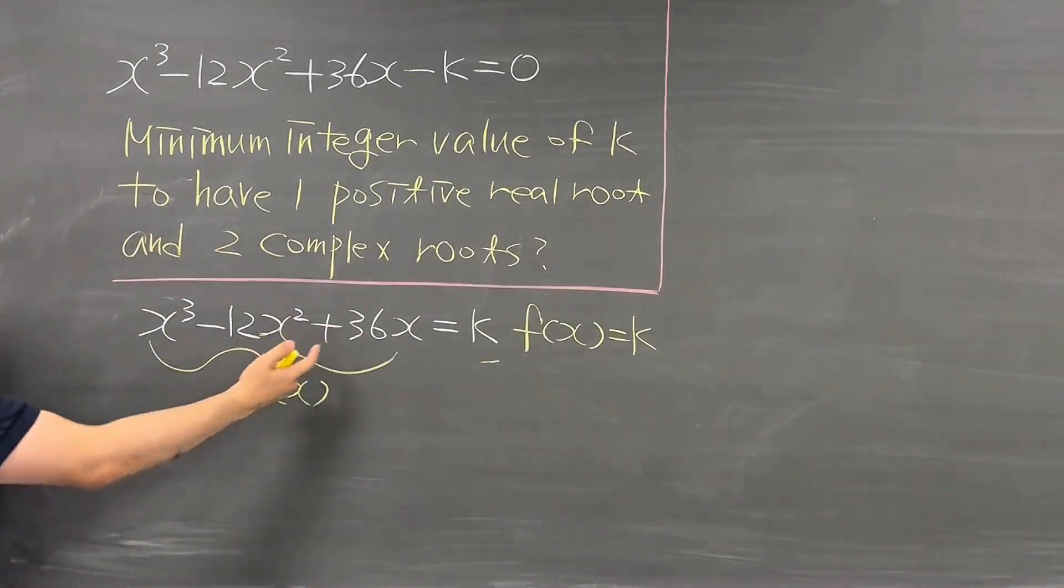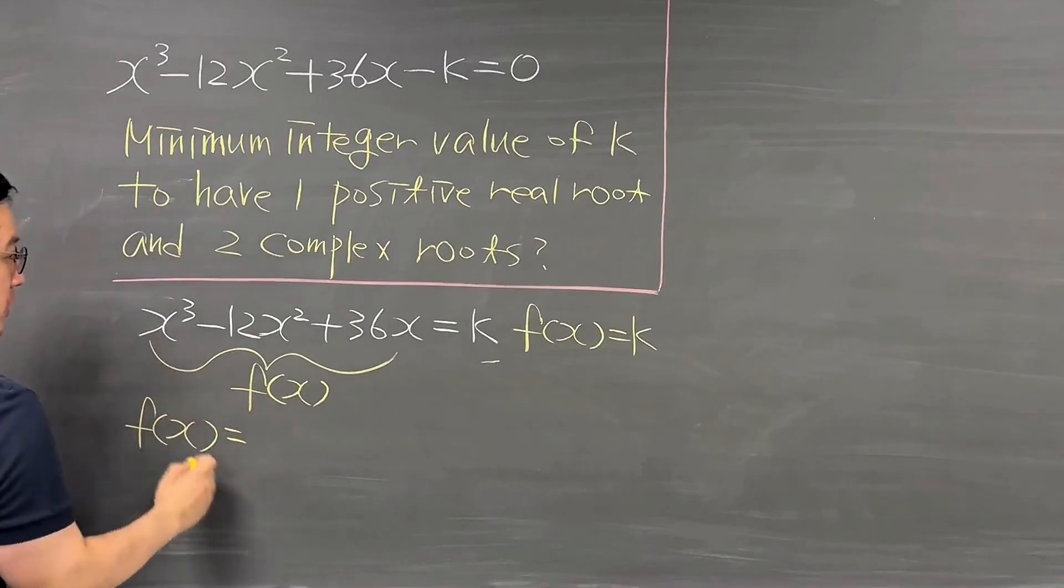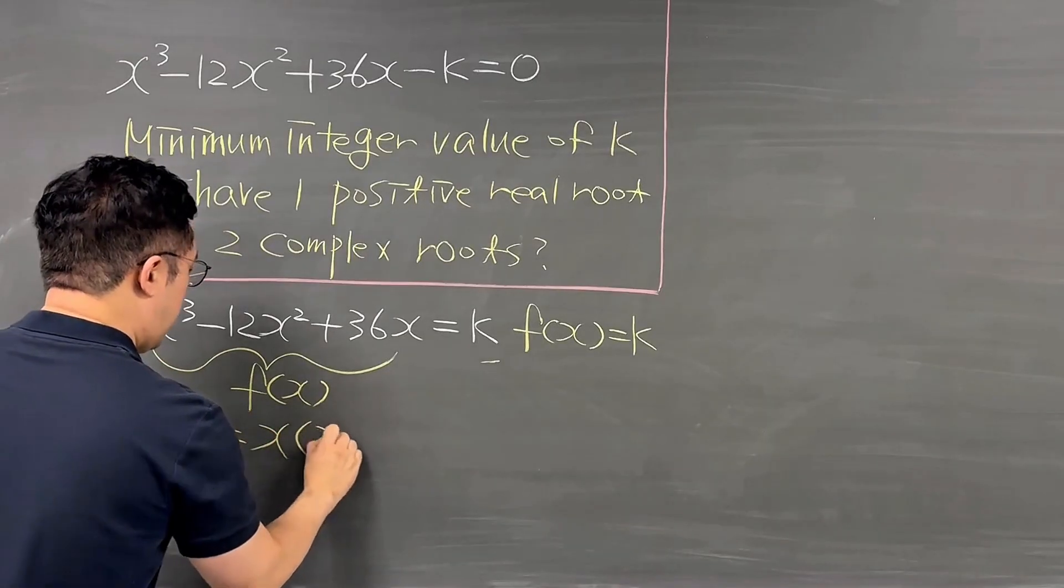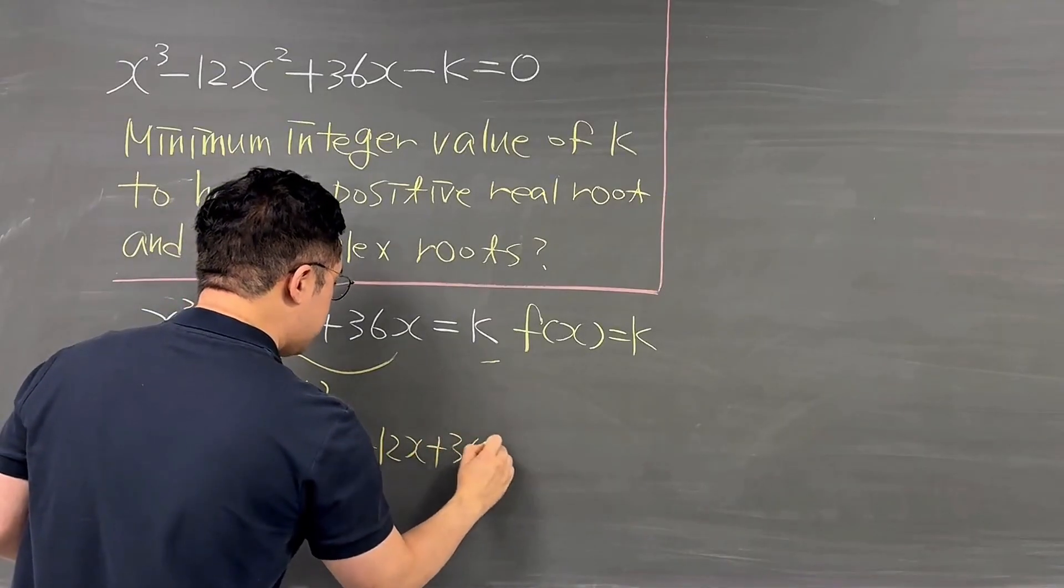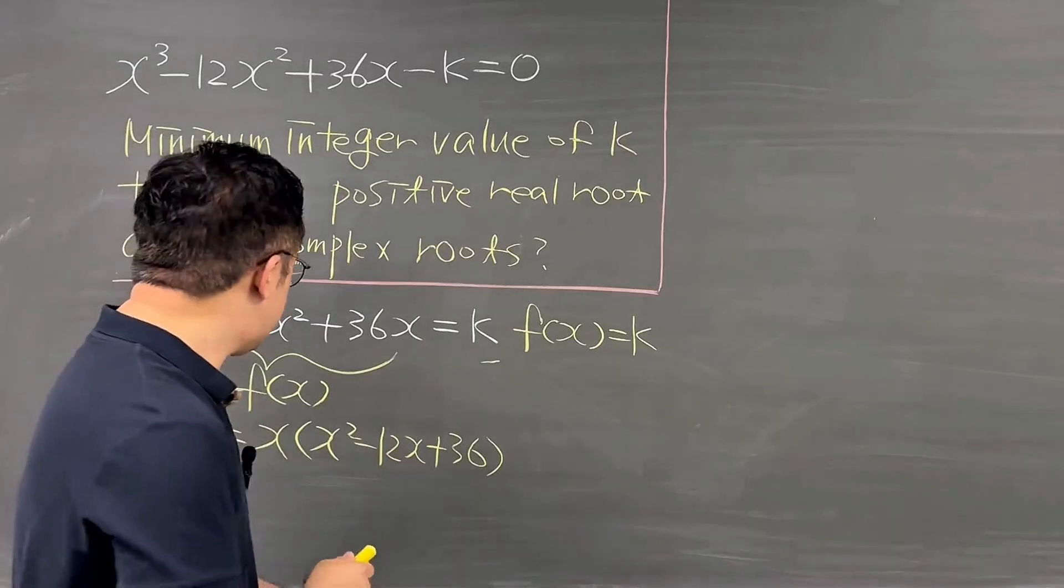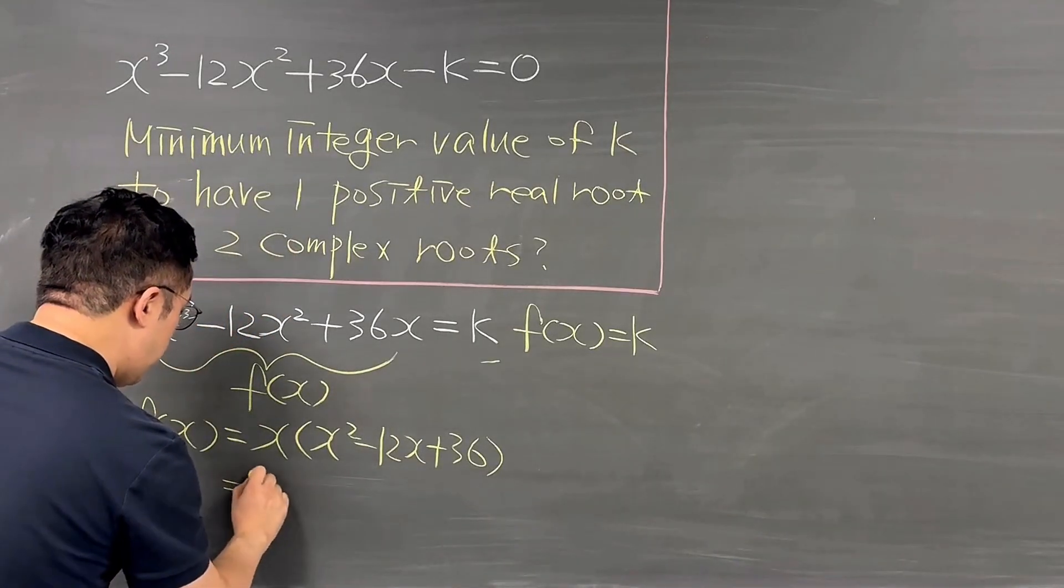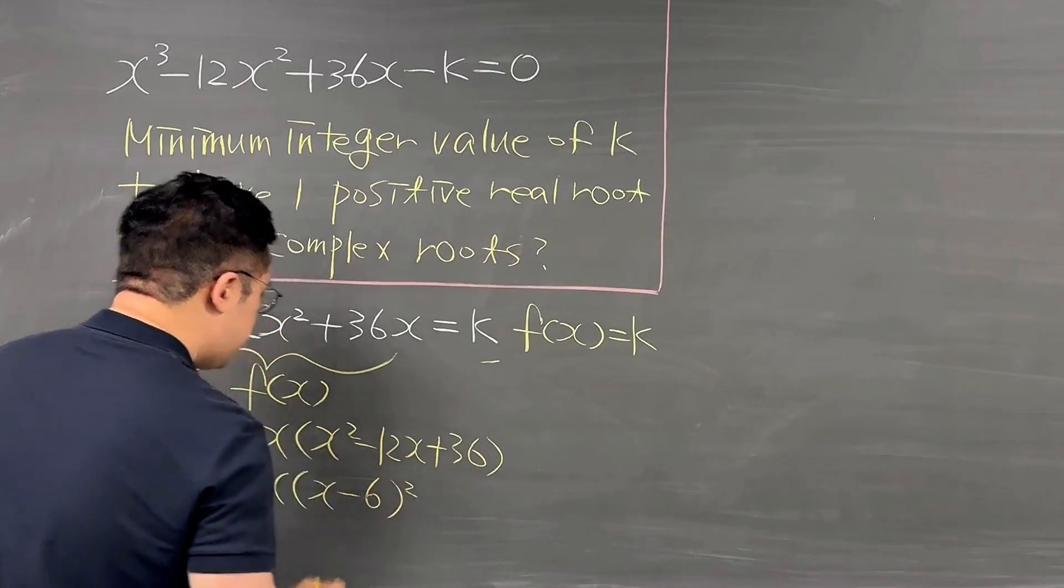So let's talk about this f(x). Seems like we have the common factor of x. So your f(x) is equal to x(x²-12x+36). Looks like your parenthesis part is a perfect square, (x-6)². So that's why it is now x(x-6)².